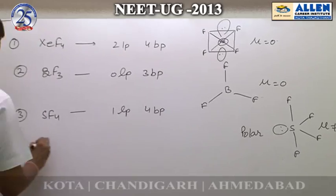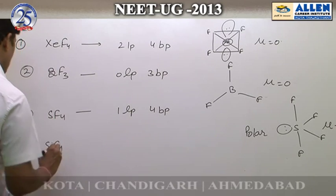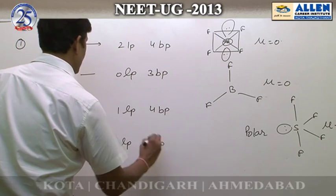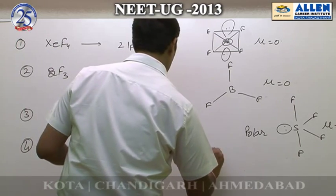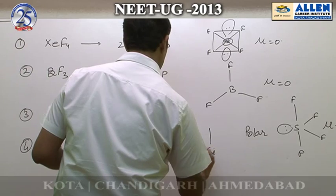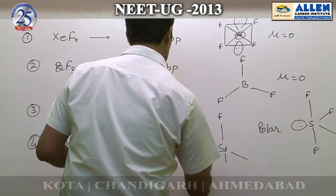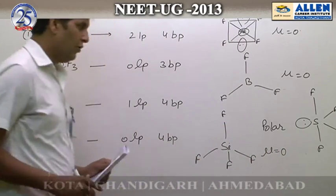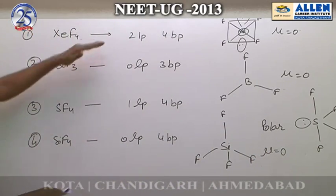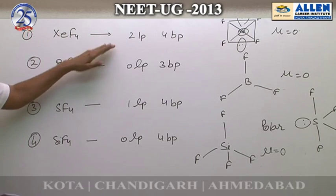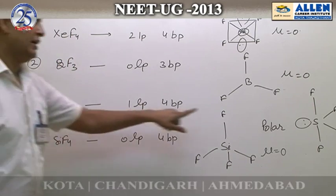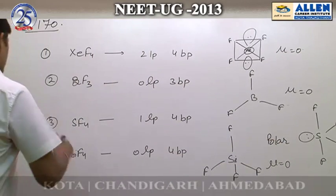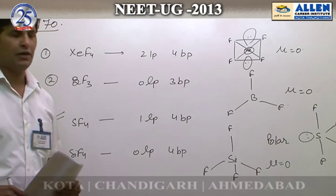Fourth option: SiF4 has 0 lone pairs and 4 bonding pairs. The geometry is tetrahedral, which is symmetrical, so mu = 0. Considering all options — first no, second no, third option SF4 is the only polar molecule. Therefore, the correct answer is third.